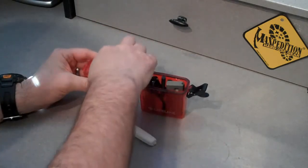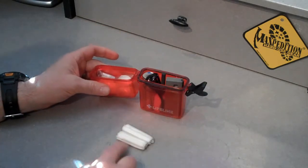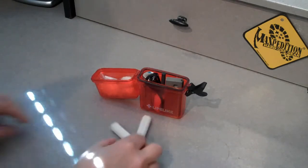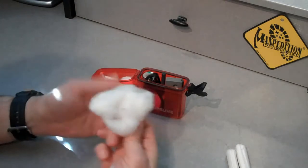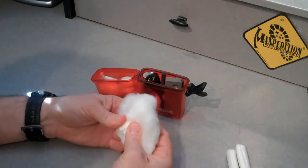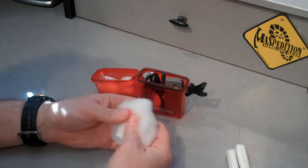Inside, I keep a couple of tampons. These are fantastic fire starters. Now what you want to do is you want to take this little outer layer off. And once you have that layer off, you can then just start to pull the material apart.